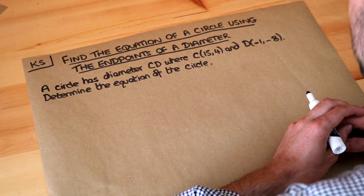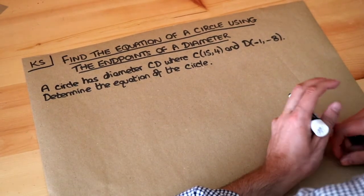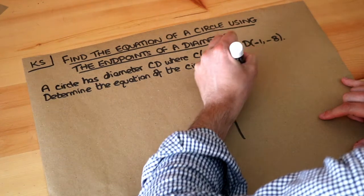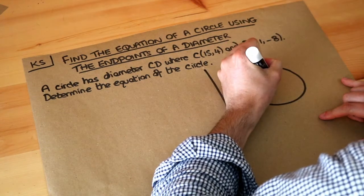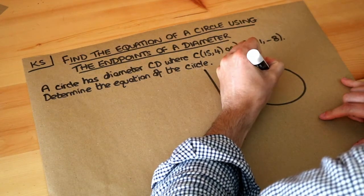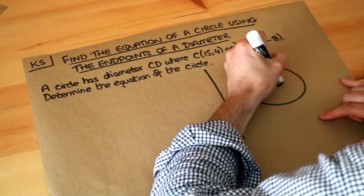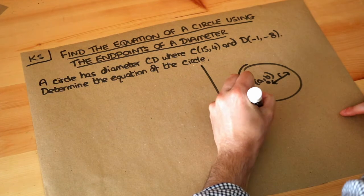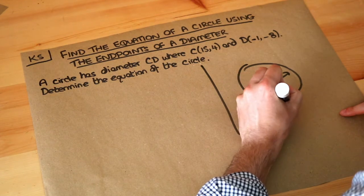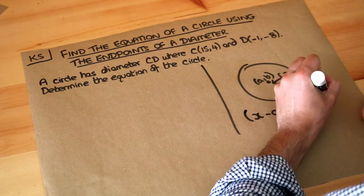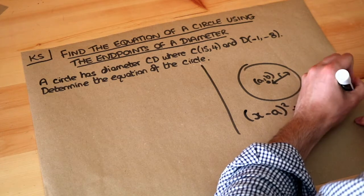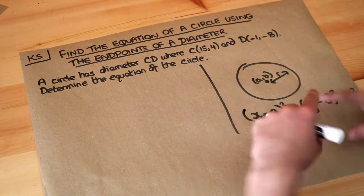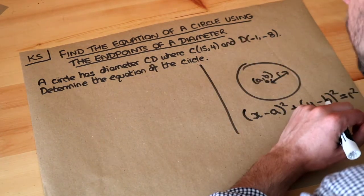In a previous video we saw how to find the equation of a circle in general. If we had a circle with center (a,b) and radius r, then the equation of that circle could be written as (x-a)² + (y-b)² = r². Where r is your radius, the center of your circle is a and b, and x and y are just variables which stay as x and y.